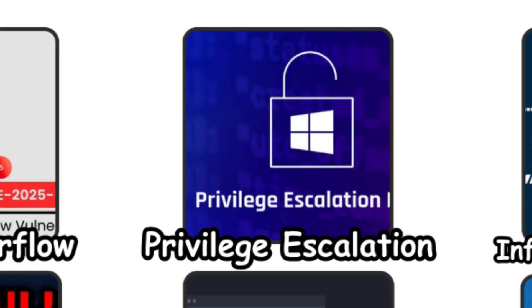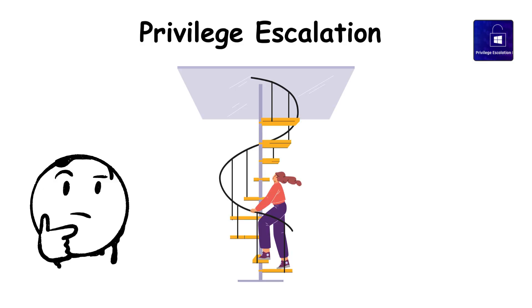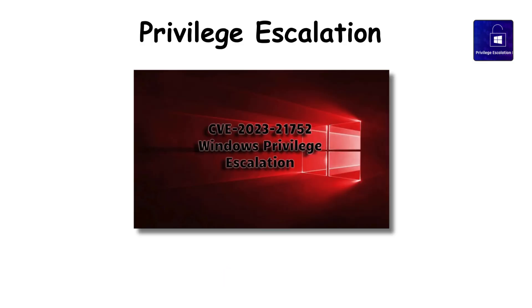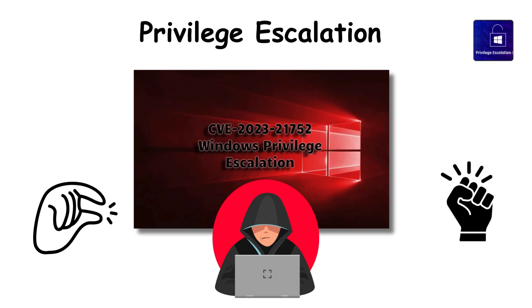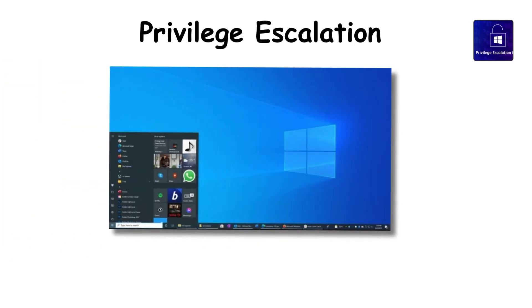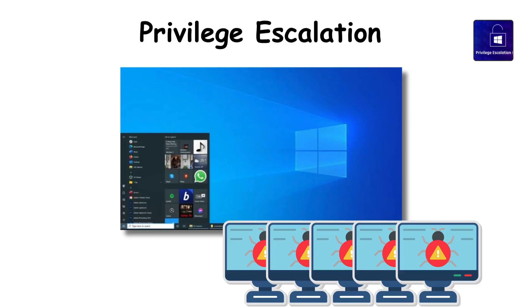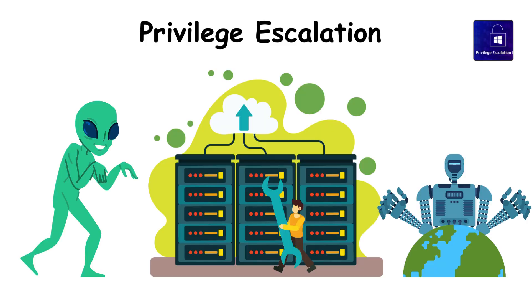Privilege escalation. Think of someone climbing a staircase they were never allowed to climb. Privilege escalation lets attackers start with small powers and secretly upgrade themselves to system-level access. Windows 10 had several bugs where normal apps suddenly gained administrator rights. It is like a stranger sneaking into the control room and taking over.